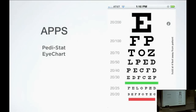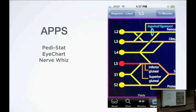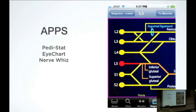I use this visual acuity app all the time — anybody with a vision complaint, you hold it 14 inches from the patient's face and you can get a quick visual acuity. Nerve Whiz is by a neurologist — you can punch in a muscle that's weak, a sensory distribution that's messed up, and it'll tell you what nerve and what nerve root that is and give you more information. It's really fantastic — now you don't need the Maxwell's.